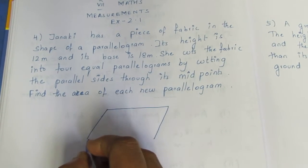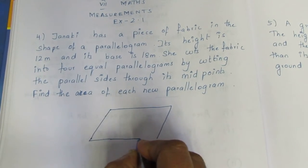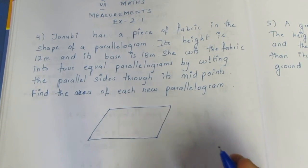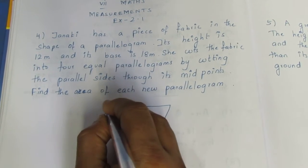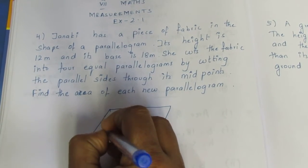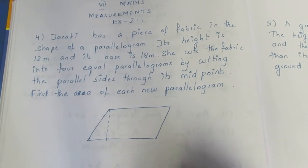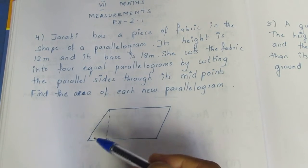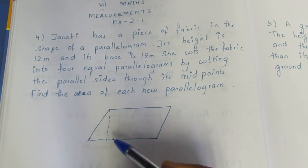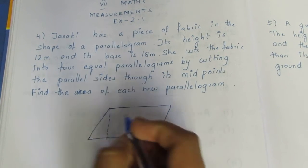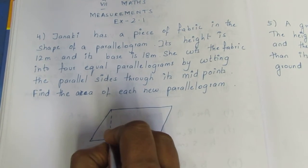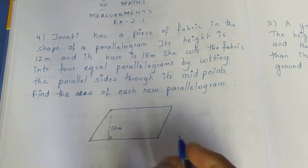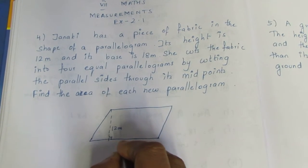We draw the parallelogram shape. The height is marked at 90 degrees to the base. The base is 18 metres and the height is 12 metres.